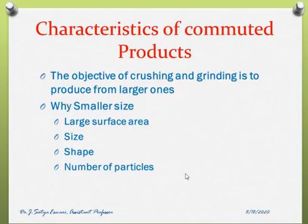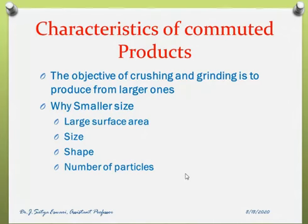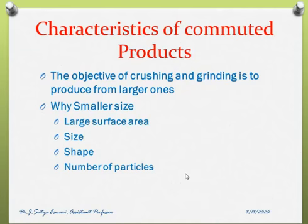We also need to understand why we consider comminuted or size-reduced products and what are their properties. The objective of size reduction is to produce small particles from larger ones. Small particles are designed either because of their large surface area or because of their shape. The key properties of any solid particle include large surface area, size, shape, and number of particles.